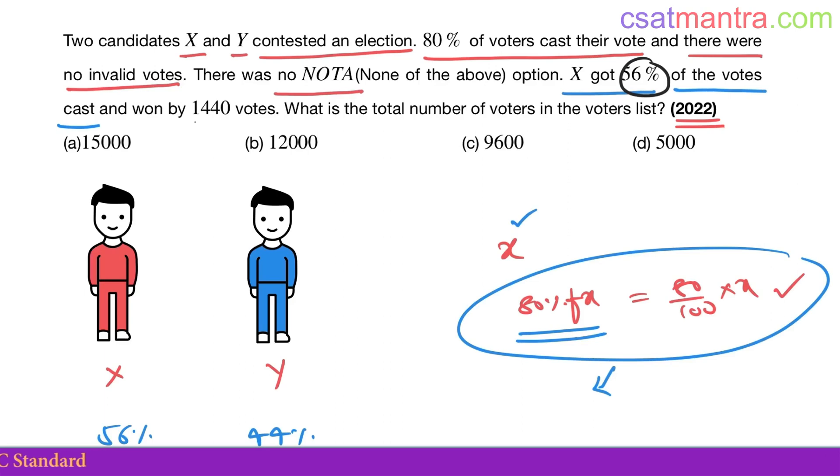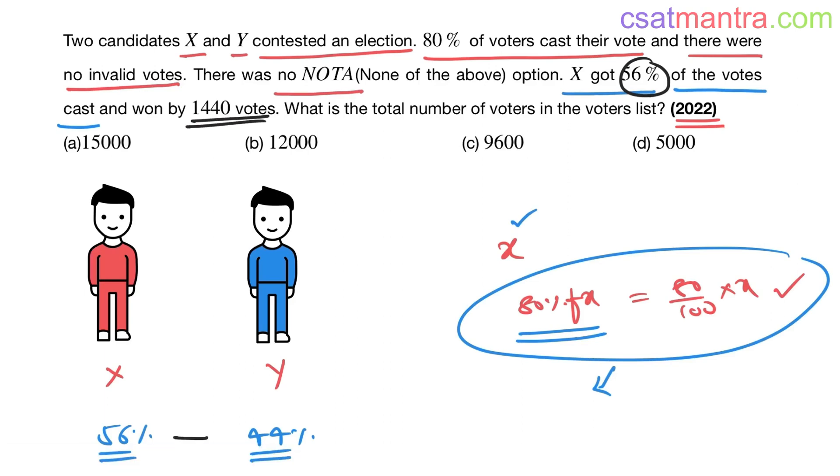X got 56 percent of the votes and won by 1440 votes. This difference is 1440. That is 12 percent of these many votes cast. 80 percent of X is equal to 1440. He won by 1440, the difference is 1440.